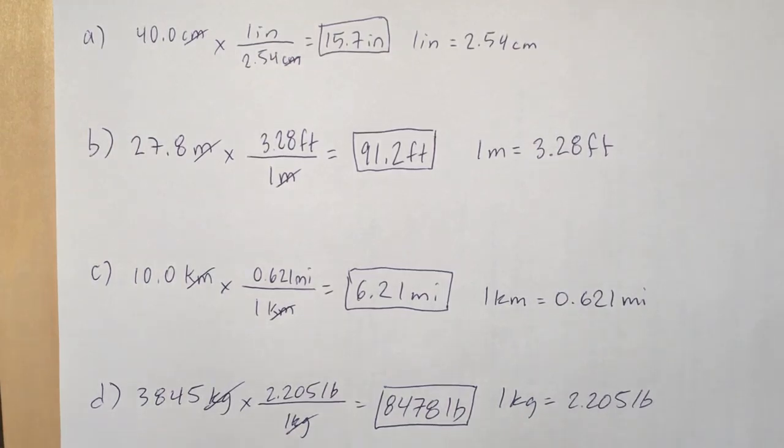Let's go to c. Now 10 kilometers, we're going to cancel out the kilometers by putting it on the bottom, using the conversion factor on the right, 0.621 miles on the top. So we're going to multiply that by 10, giving us 6.21 miles to the right number of sig figs.